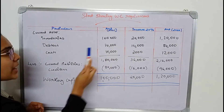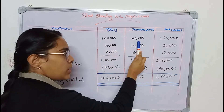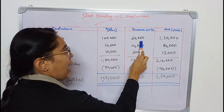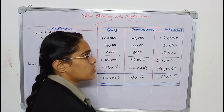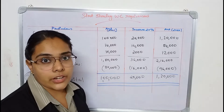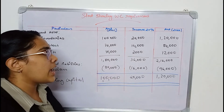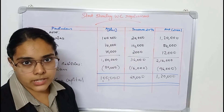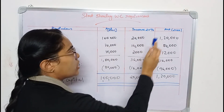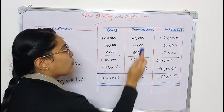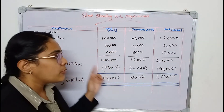Inventories were 1,00,000 in the previous balance sheet. Calculate 20% of 1,00,000 which gives 20,000. Adding 1,00,000 plus 20,000 gives a current year inventory value of 1,20,000. Debtors were 70,000 in the previous balance sheet. 20% of 70,000 is 14,000. Adding 14,000 to 70,000 gives 84,000 for the current year.